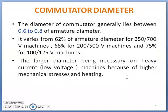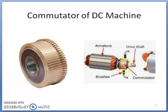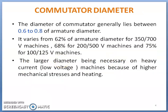Under commutator design, the diameter of the commutator is generally between 0.6 to 0.8 of the armature diameter. If the armature diameter is D, then the commutator diameter will be 0.6D to 0.8D. This ratio varies with voltage rating: 62% of armature diameter for 350–700 volt machines, 68% for 200–500 volt machines, and 75% for 100–125 volt machines.